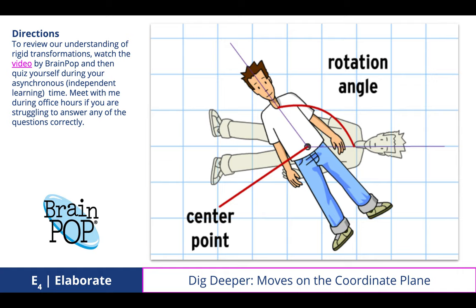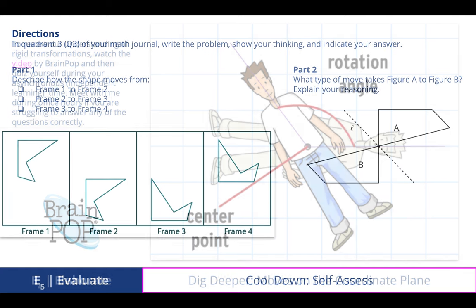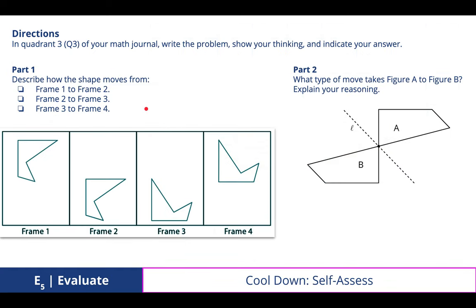In quadrant three of your math journal write the problem, show your thinking, indicate your answer. We took a look at part one and how the frames or the figures in each frame are moving or transforming.